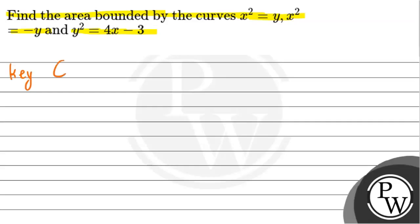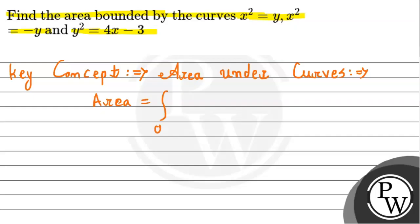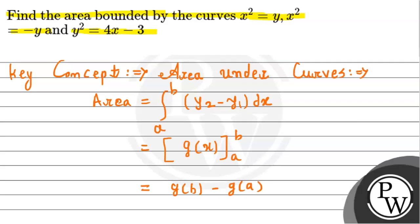So we start with the solution. But before that, let's talk about the key concept we are going to use here. We will use the area under curves concept. The required area under two curves will use the formula: integration from a to b of (y2 - y1) dx, where y1 and y2 are functions of x, and x varies from a to b. We put the upper and lower limits to get the final answer. The integration formula is: integral of x^n dx = x^(n+1) / (n+1).